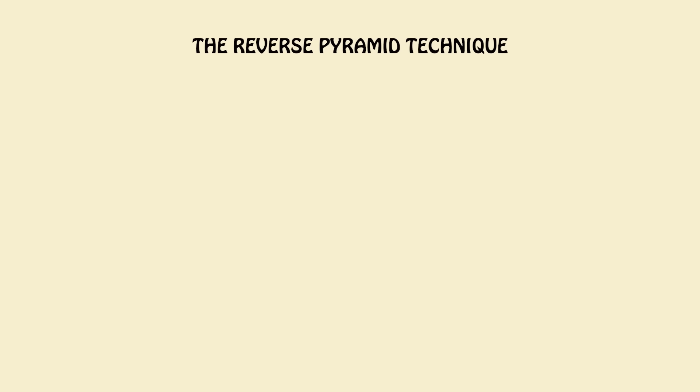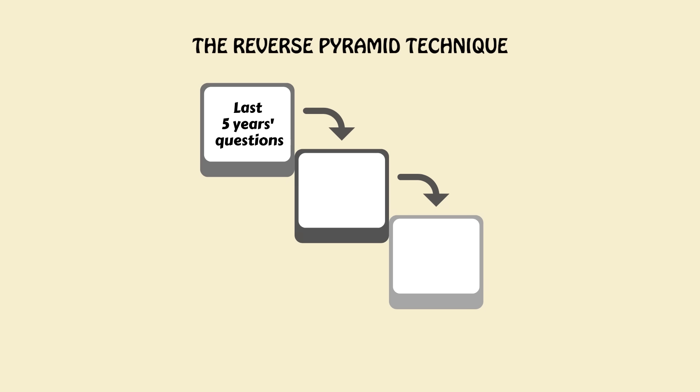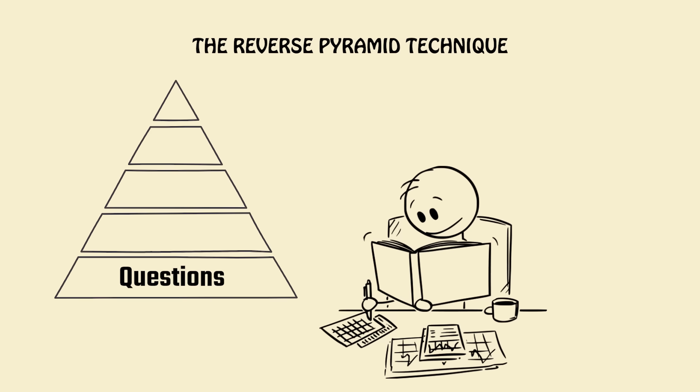The reverse pyramid technique. Start from the top. Look at last 5 years' questions, identify most repeated topics, prioritize those chapters like you're guarding your last brain cell. Then study questions, concepts, examples, notes, extra. Most people go in reverse, but you? You're using exam blueprints to beat the system.